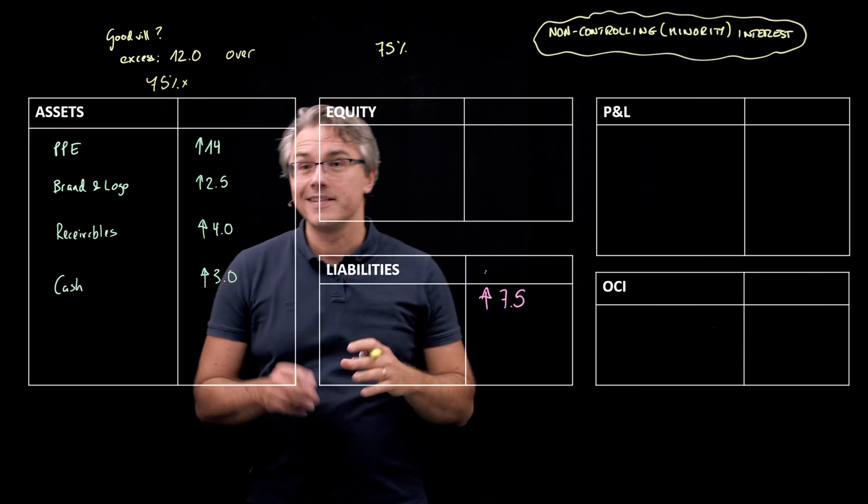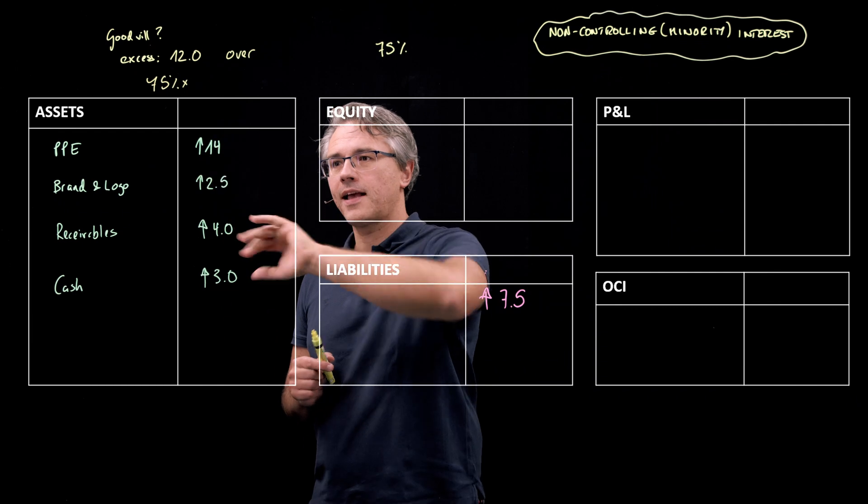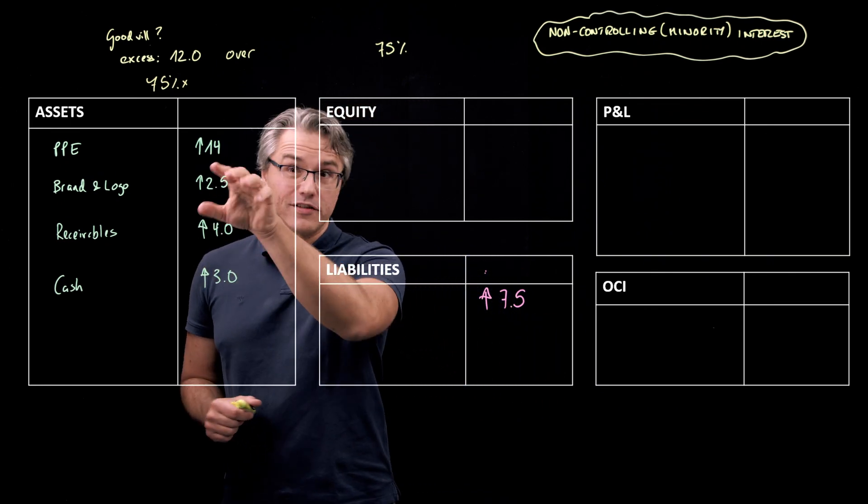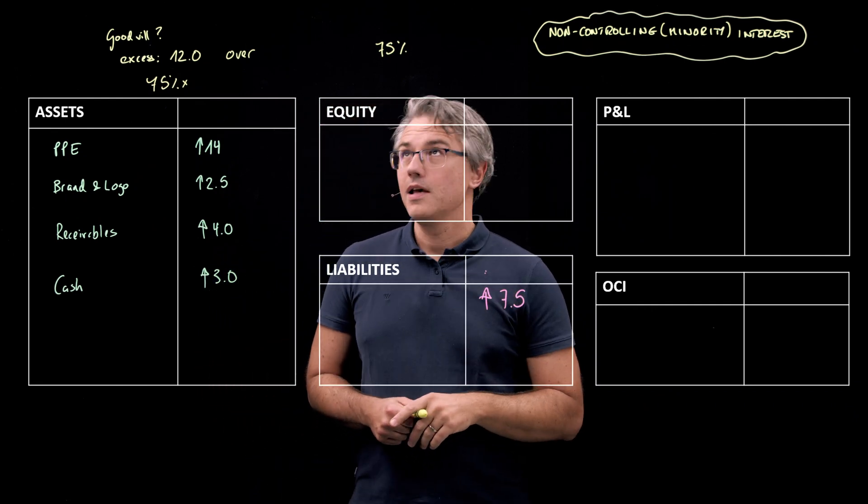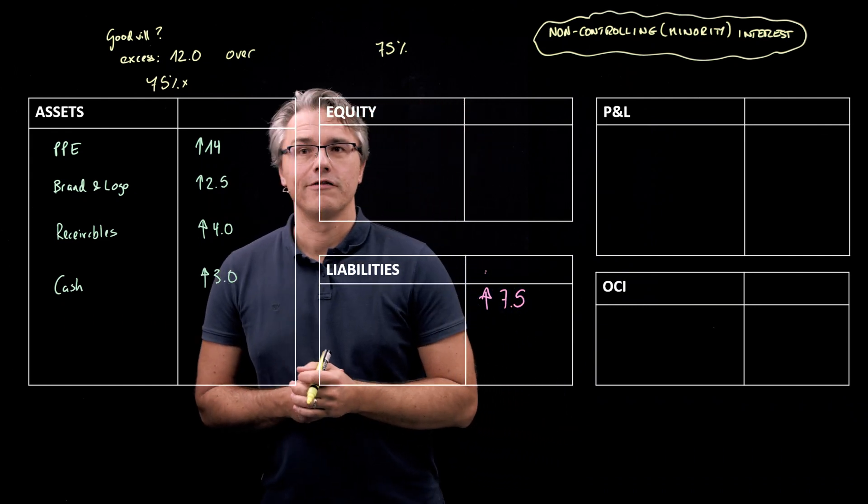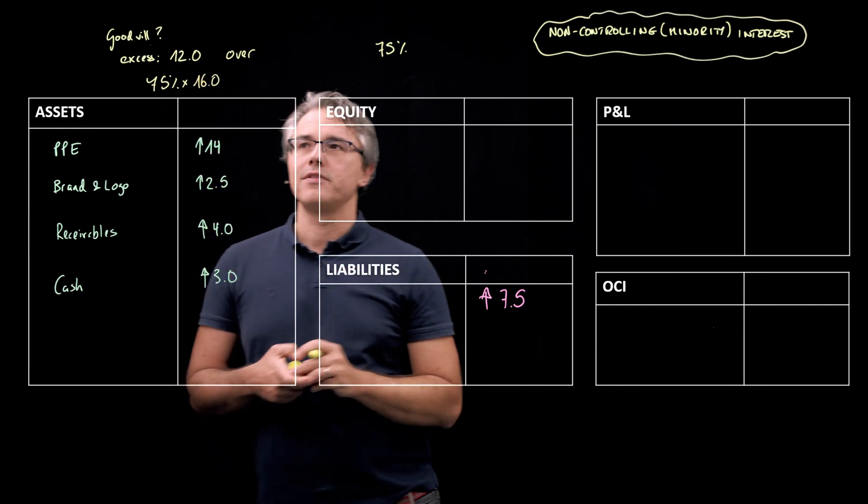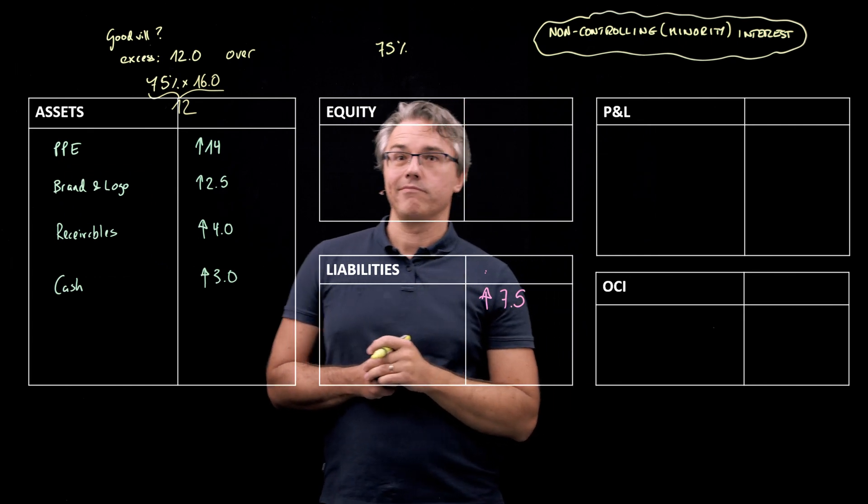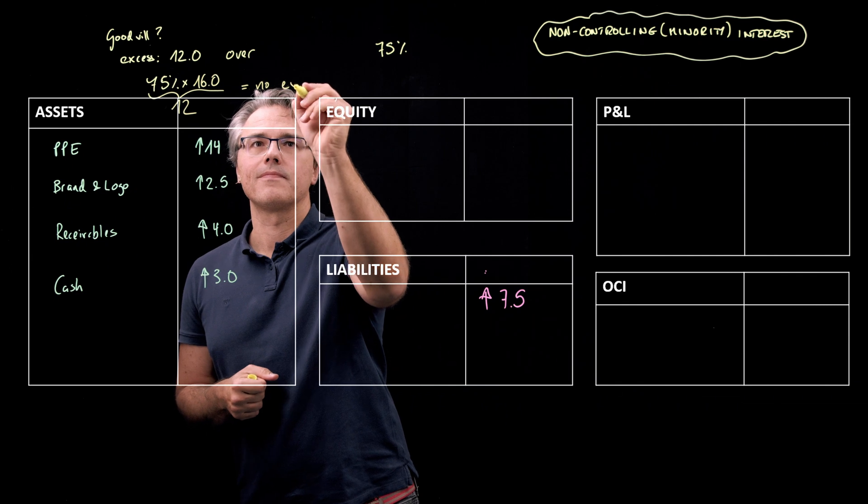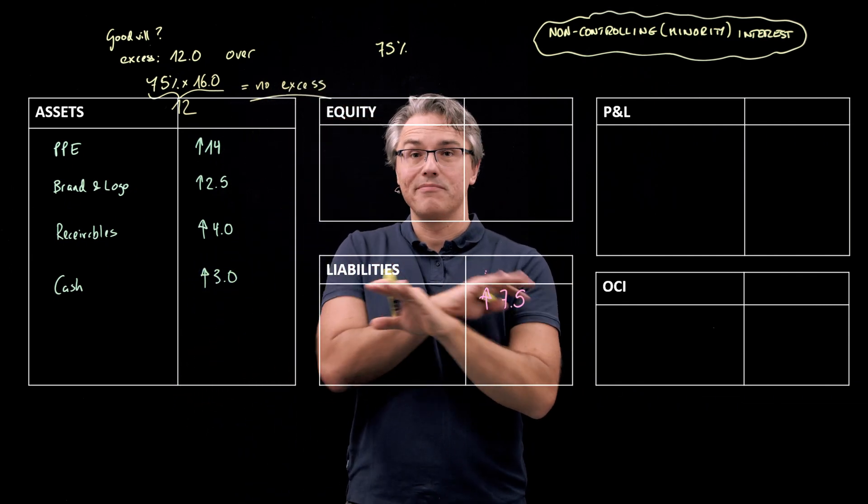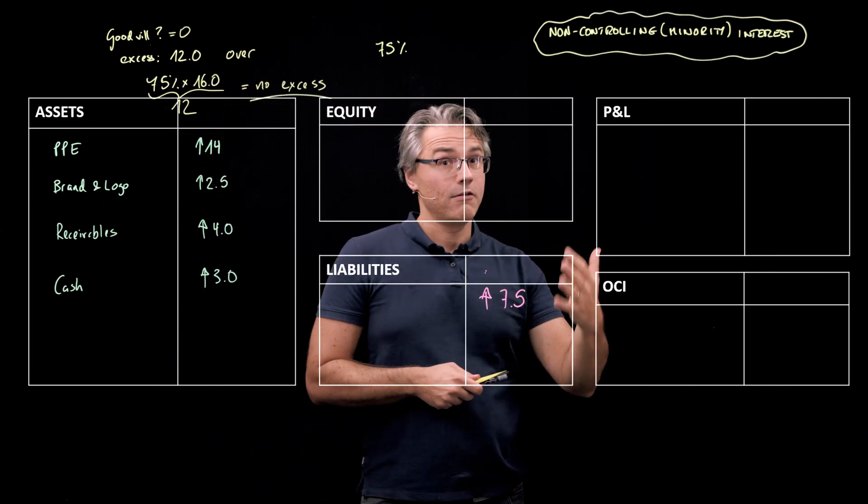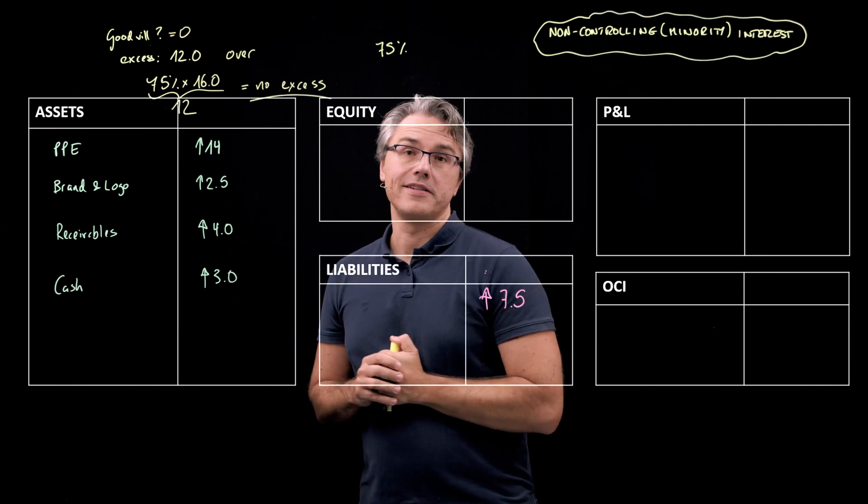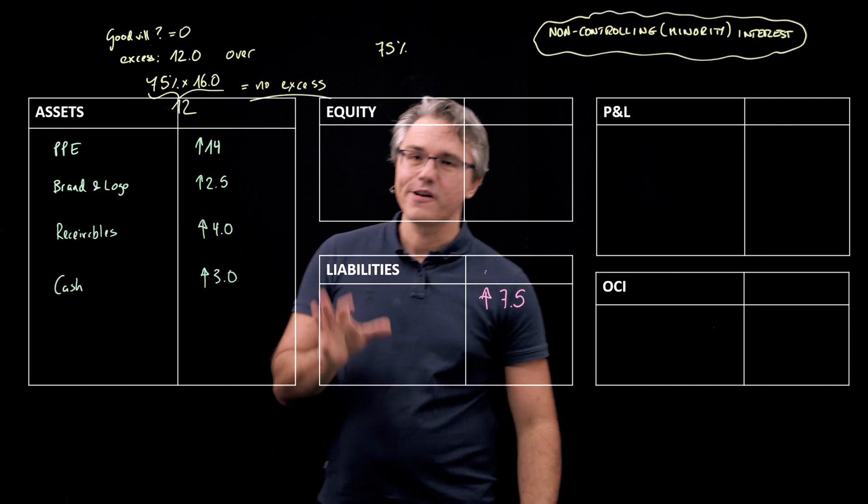Now, the fair value of the net assets acquired is exactly the same as before. It's basically the result of taking these assets, 14 plus 4 plus 3, which I know now is 21. 21 plus 2.5 is 23.5 minus 7.5 for the liabilities, gives us a fair value of the net assets of 16. And obviously, 75% or 3 quarters of 16 is going to be 12. Now, excess of the purchase price, 12 over 12, no excess. There is no surplus. There is no deficit. It's just simply equal to zero. So, goodwill in this case doesn't exist. And there is no gain on a bargain purchase either. Okay, so we don't have to worry about this. Let's just focus on these numbers.